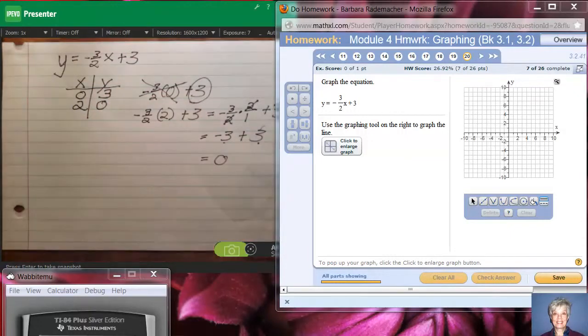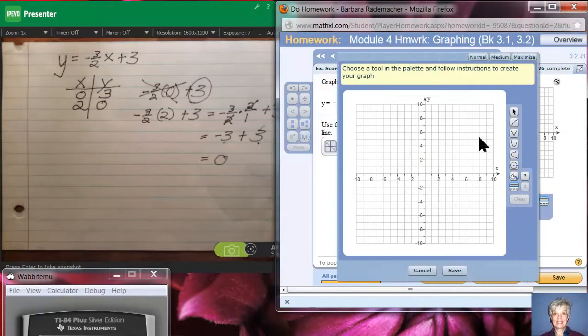Now I can come up here and I can graph those points by doing the following. Click on the little glass up here. That will make the graph bigger for you. Now choose what's called the line tool. You see the name appearing there. I'm going to click, and now I'm going to click on the first point.